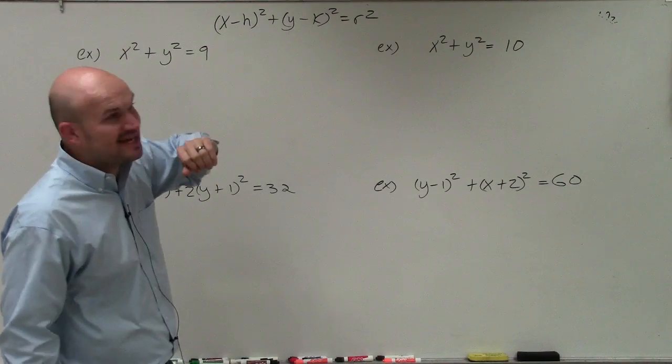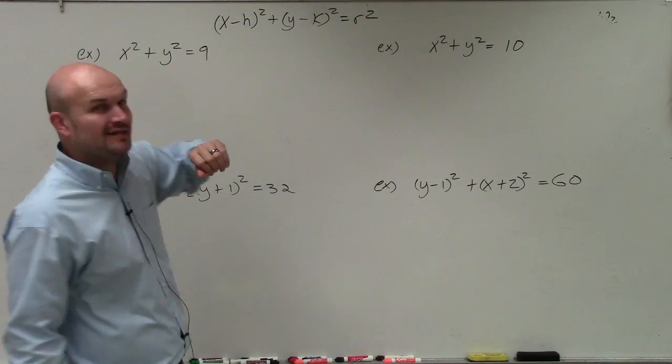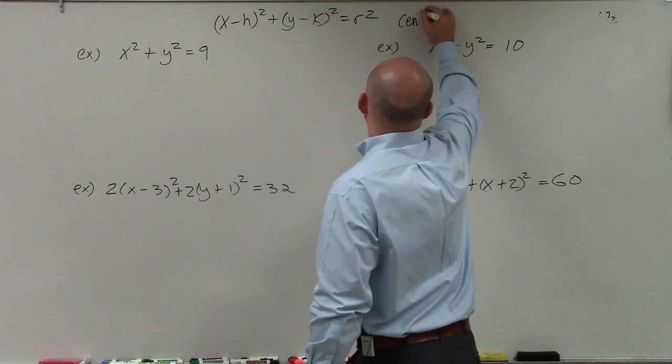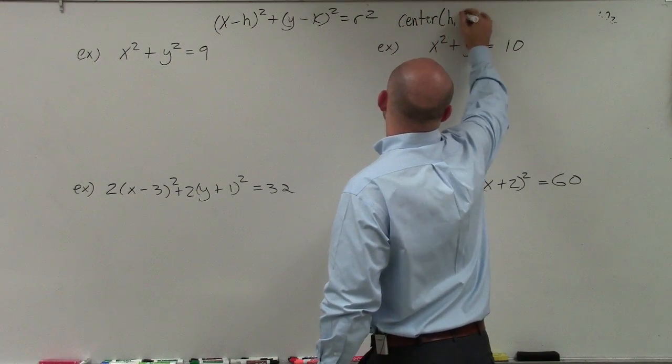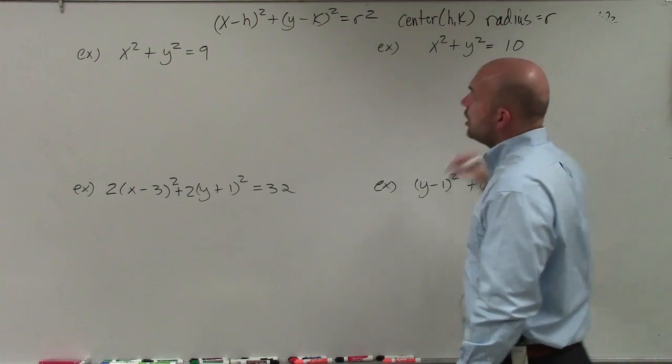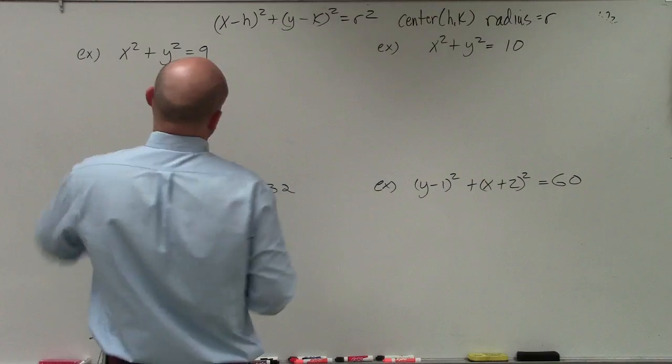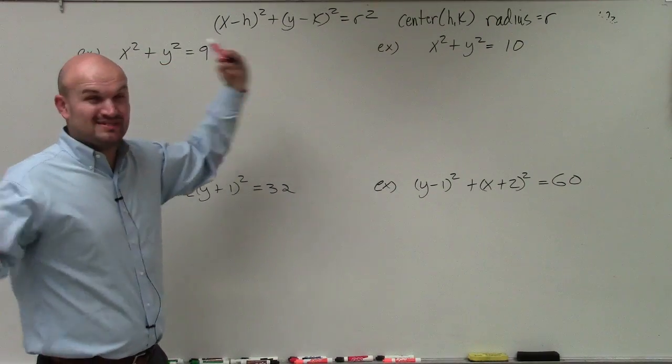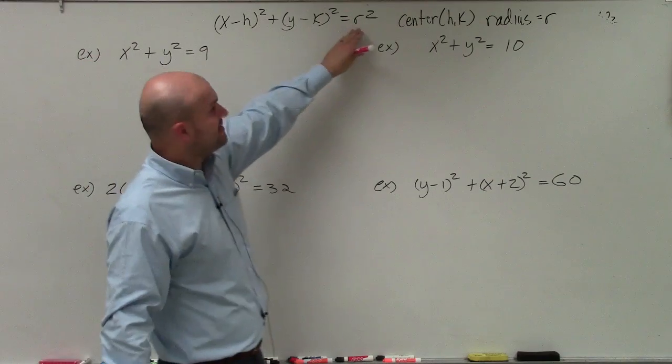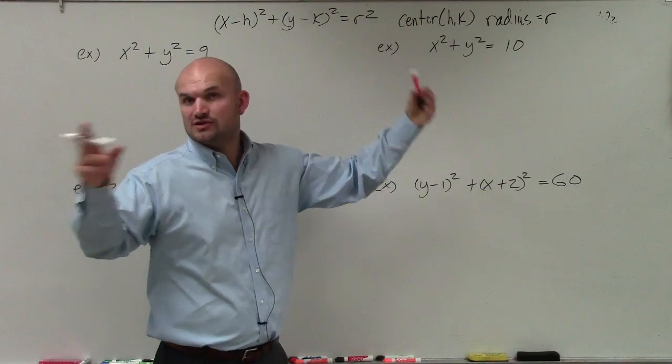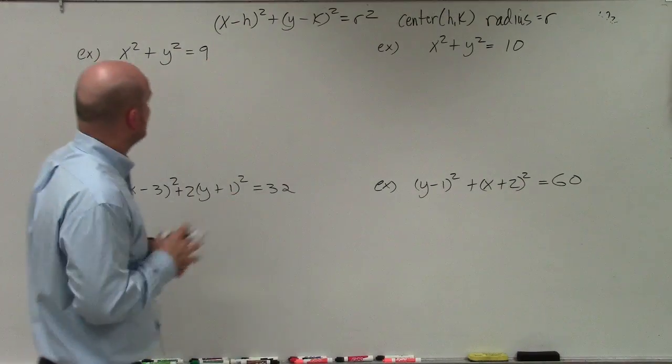That equation is x minus h squared plus y minus k squared equals r squared, where the center is the coordinate points h comma k, and the radius is the value of r. You can see h and k are being subtracted from our x and y variables, which represent any point on the circle. A lot of people get stuck here—r is just your radius, not r squared.